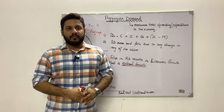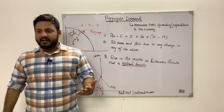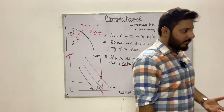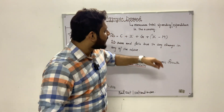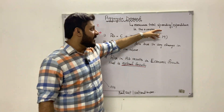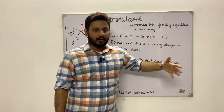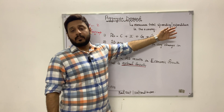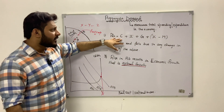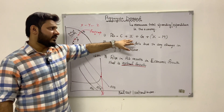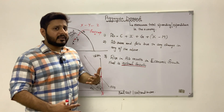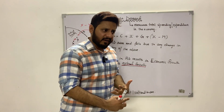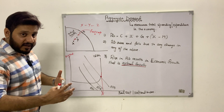Full employment occurs because aggregate demand is rising. Whether resources are fully or under-utilized depends on the level of aggregate demand in the economy — specifically the amount of total spending and expenditure taking place. The more consumer expenditures, government expenditures, net exports, and investments are taking place, the faster actual growth occurs and the quicker we arrive at the full employment level of output.